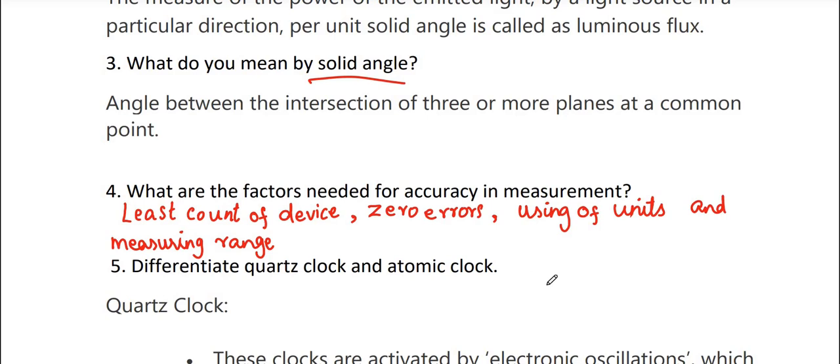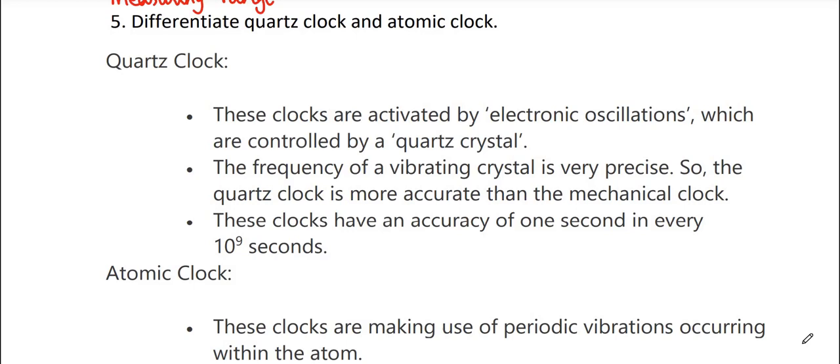Next one, differentiate quartz clock and atomic clock. So for quartz clock, these clocks are activated by electronic oscillations which are controlled by a quartz crystal. The frequency of a vibrating crystal is very precise, so the quartz clock is more accurate than the mechanical clock. These clocks have an accuracy of 1 second in every 10 to the power 9 seconds.